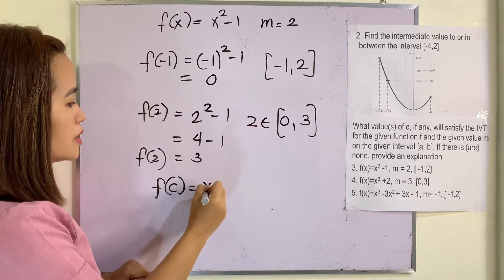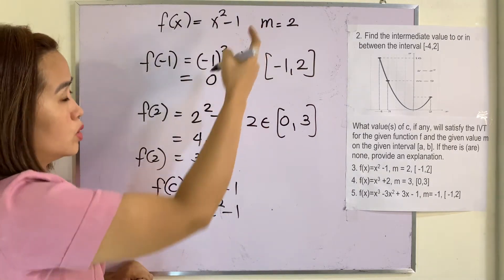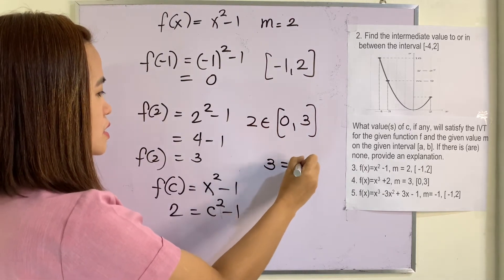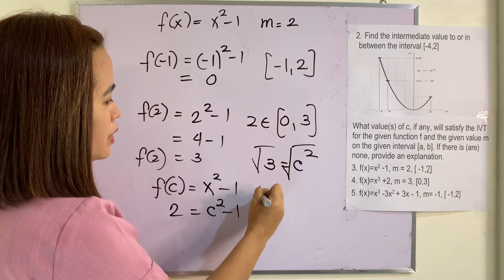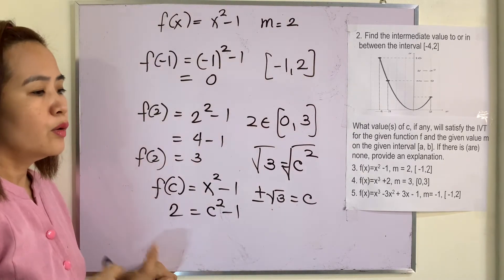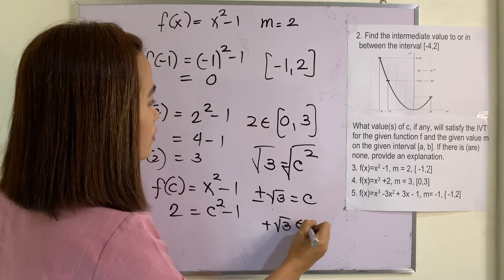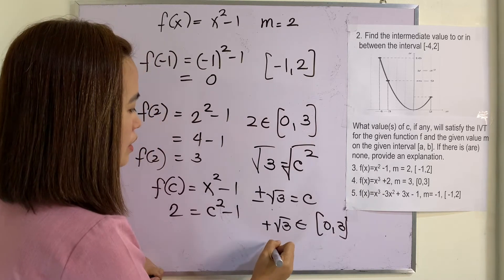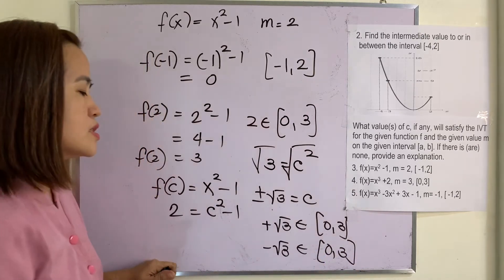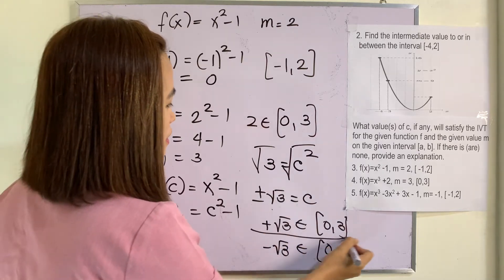Let us now solve for f(c). f(c) equals x squared minus 1, replacing x by c gives c squared minus 1. f(c) is also equal to m, which is 2. Transposing, 3 equals c squared. Getting the square root, we have positive and negative square root of 3. Remember that square root of 3 is approximately 1 point something. Positive square root of 3 is an element of [0, 3], but negative square root of 3 is not. The intermediate value is positive square root of 3.